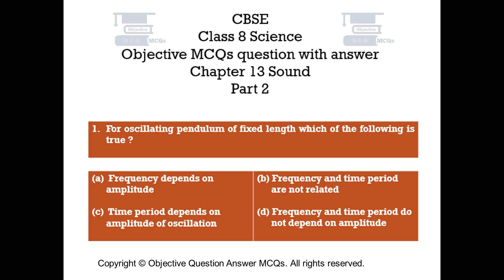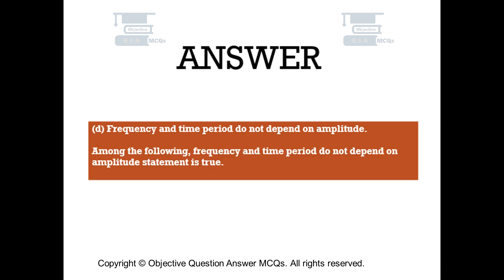Question number 1. For an oscillating pendulum of fixed length, which of the following is true? Option A: Frequency depends on amplitude. Option B: Frequency and time period are not related. Option C: Time period depends on amplitude of oscillation. Option D: Frequency and time period do not depend on amplitude. The right answer is option D. Frequency and time period do not depend on amplitude — this statement is true.